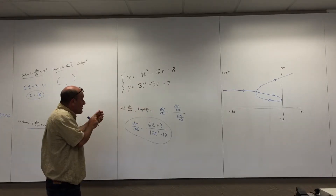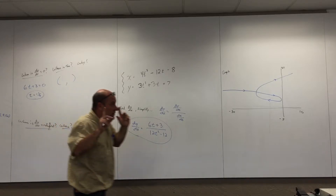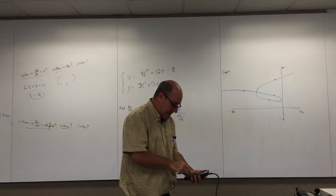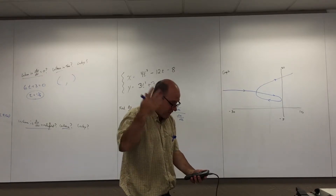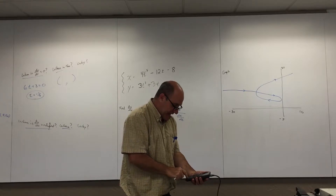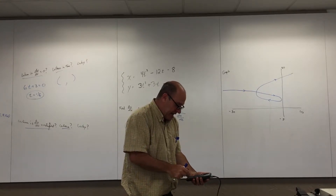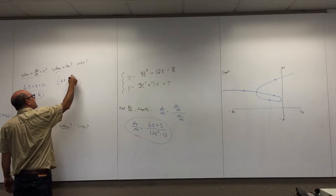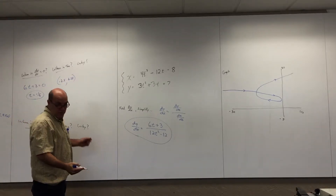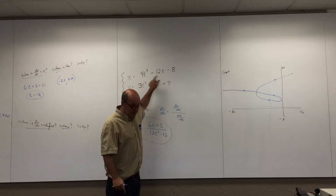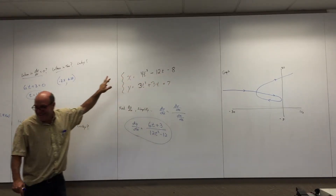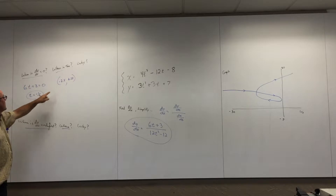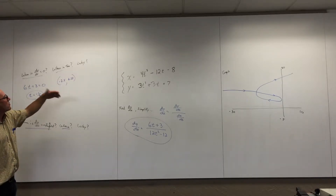Where is this on the graph? That would be like an x and y coordinate location. To find it, plug the t value into the original parametric equations — that gives you an x and y location. Using the calculator with t = -0.5, I get x = -2.5, y = 6.25. Plugging negative one-half into the parametric equations gives you that point.